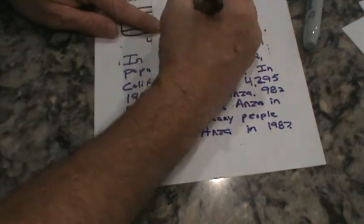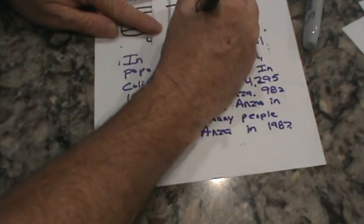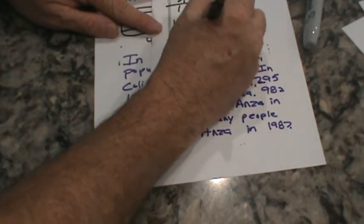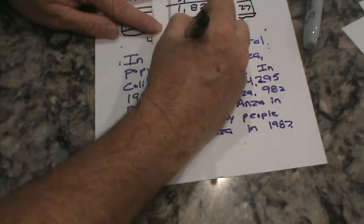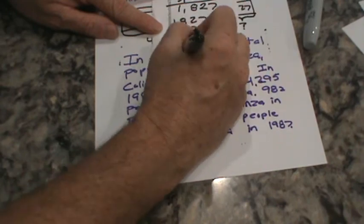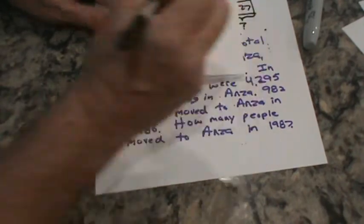Let's just write a quick sentence. 1,827 people moved to Anza in 1987. See how that worked?